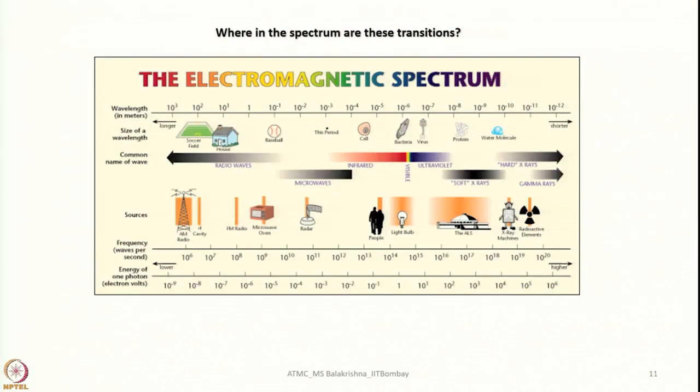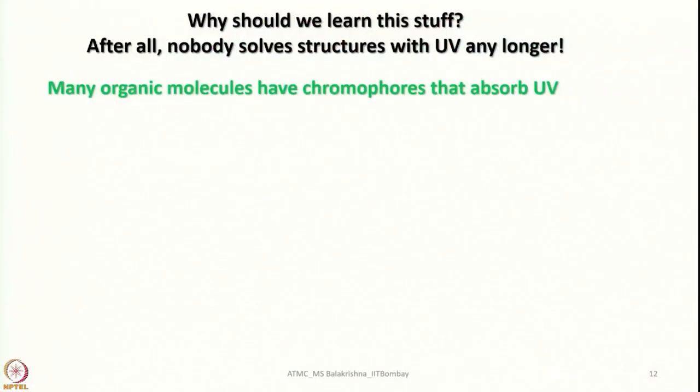Now this covers electromagnetic radiation applied in different techniques. Our attention is on ultraviolet. Let us try to look in more detail about UV-visible spectroscopy. Whenever we study something the question pops up: why should we learn this topic? It makes sense here because nobody solves structure with UV alone — just with UV you cannot solve the structure; you need proof from many other instrumental data.